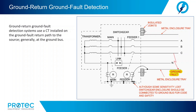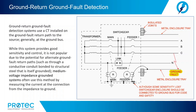Ground return ground fault detection systems use a CT installed on the ground fault return path to the source, generally at the ground bus. While this system provides good sensitivity and control, it is not popular due to the potential for alternating ground fault return paths, such as through a conductive conduit bonded to structural steel that is itself grounded. Medium voltage impedance grounded systems often use this method by measuring the current at the connection from the impedance to ground. Ground differential protection systems can be considered a subset of ground return detection systems; CTs are installed in the ground fault return path of each feeder, and if the current measured differs from the sum of the other CTs, the system operates.